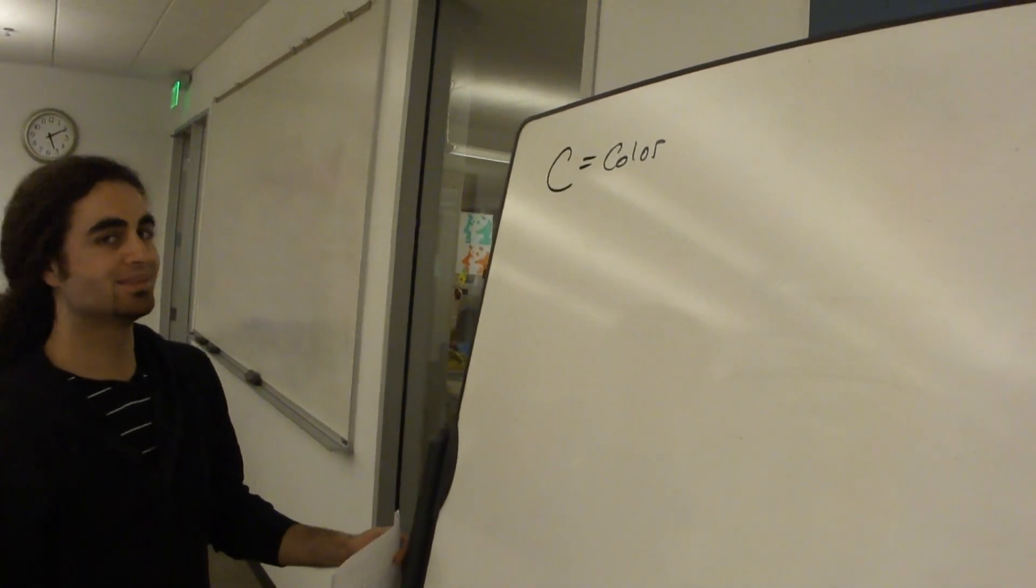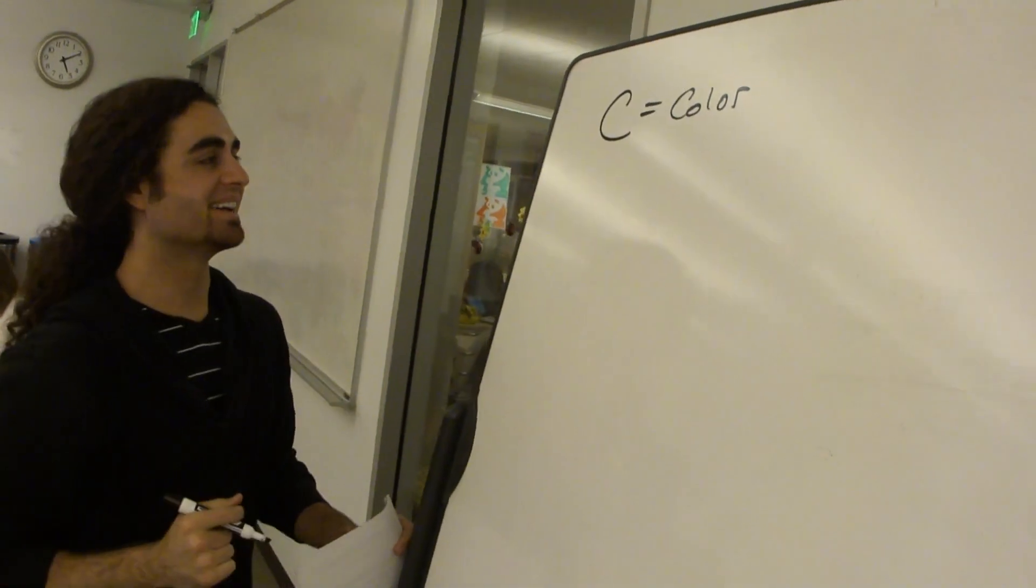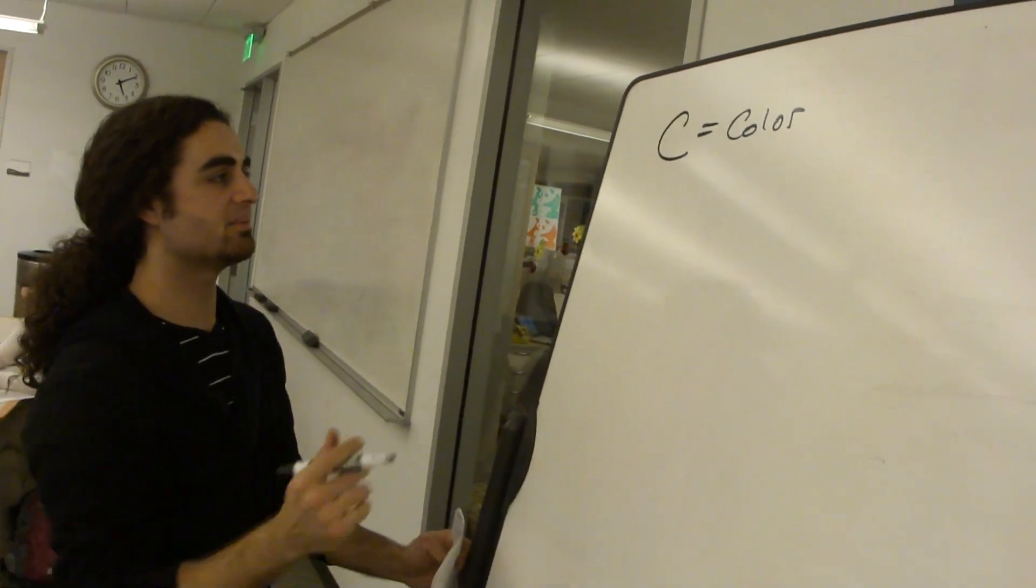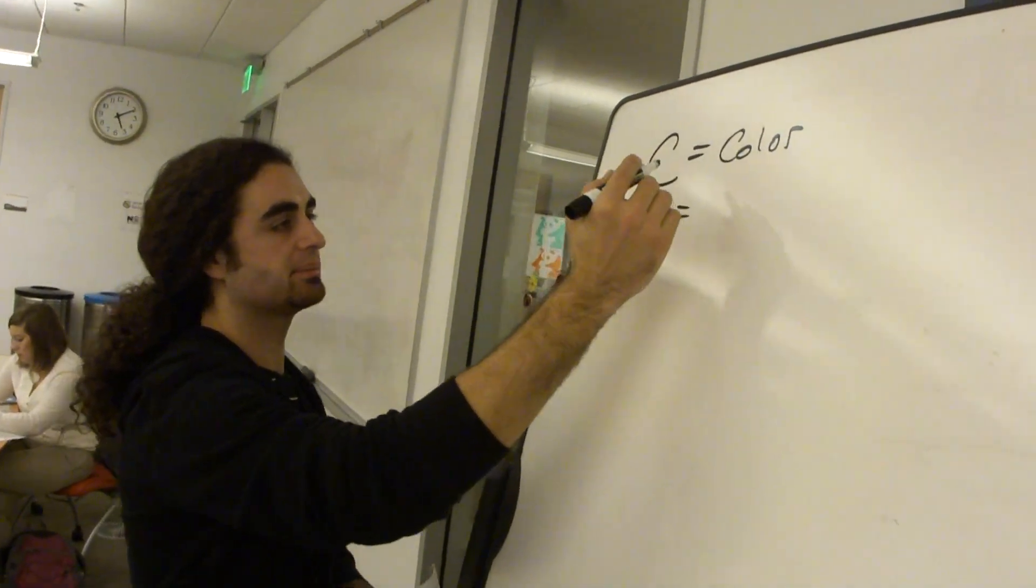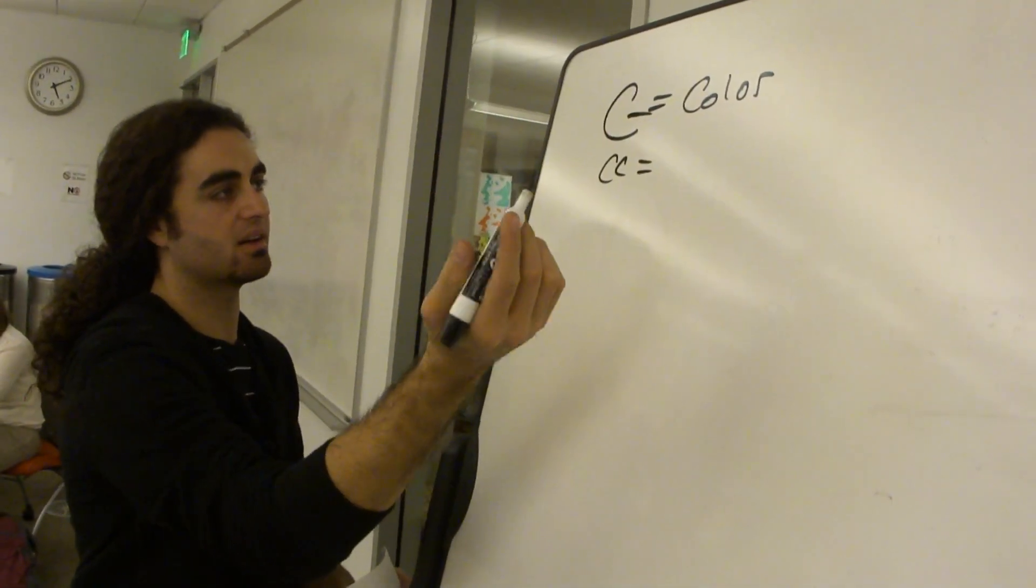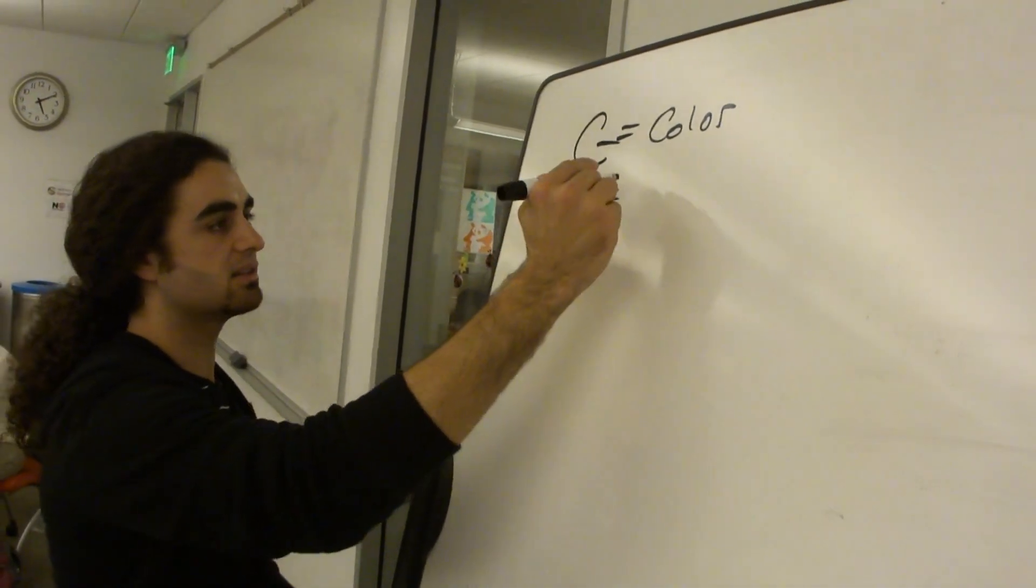Hey, let's do a recessive epistasis problem. So the problem told us that big C gives us color, so that would mean little c, little c. So big C dash is going to be color, right? That means any combination of big C. So then little c, little c is no color.